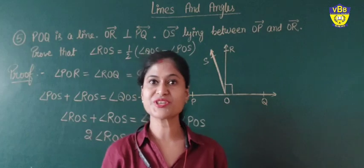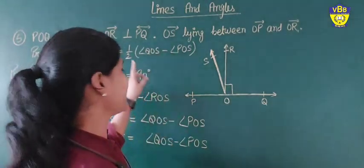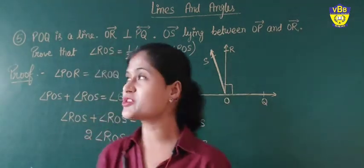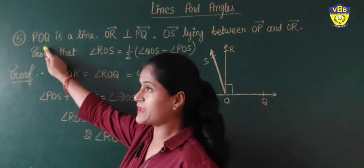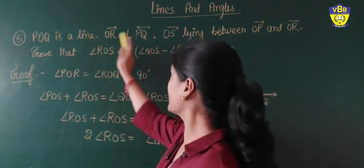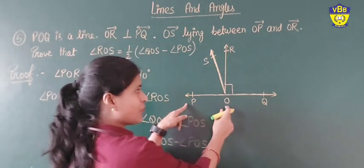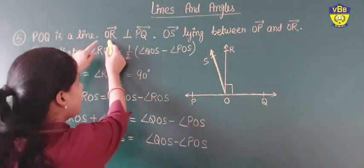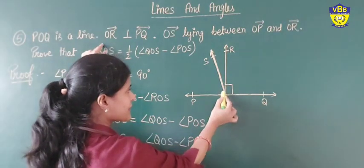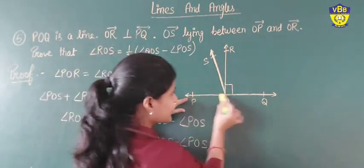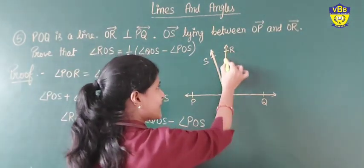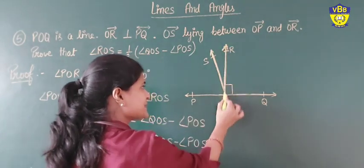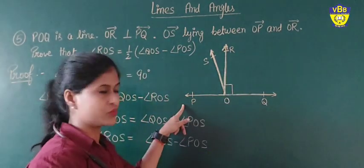The next question is very important from an examination point of view. Question number 5: POQ is a line. Ray OR is perpendicular to POQ.